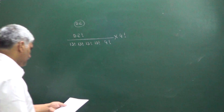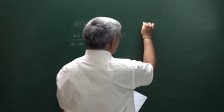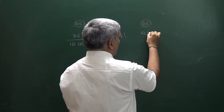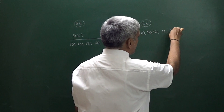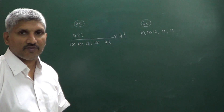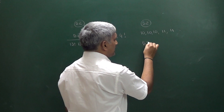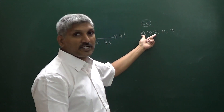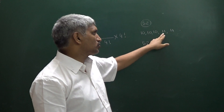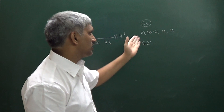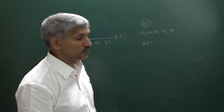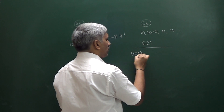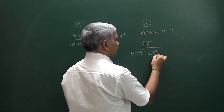Another question: total 52 cards. We want to divide into groups of 10, 10, 10, 11, and 11. Total 5 groups — one containing 10, 10, 10, another containing 11, another containing 11. That is 30 plus 22 equals 52 cards. The answer is 52 factorial divided by 10 factorial cubed into 11 factorial squared.